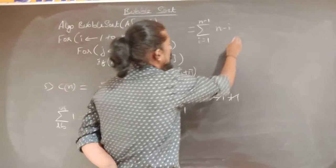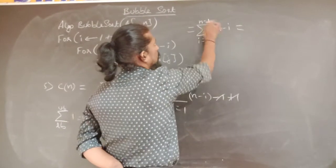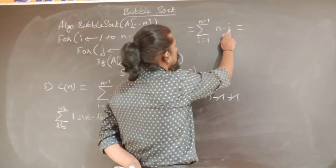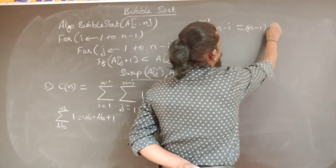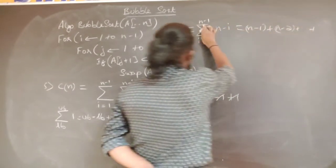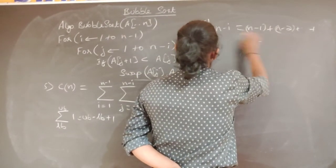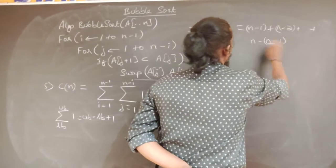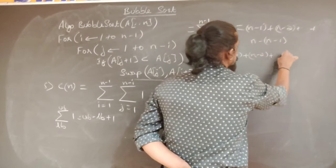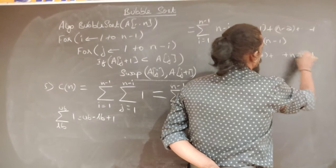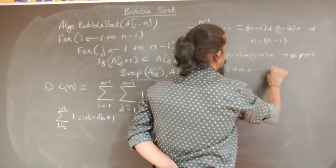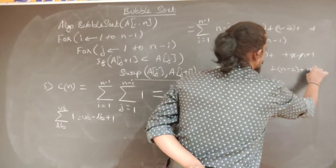Now we substitute i from 1 to n-1 in (n-i). When i=1 we get n-1; when i=2 we get n-2, and so on. The last term is n-(n-1) = 1. So the sum is (n-1) + (n-2) + ... + 1, which in reverse is 1 + 2 + ... + (n-1).